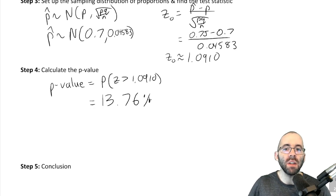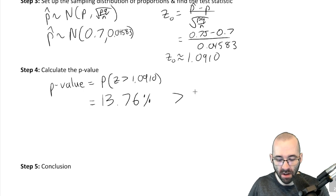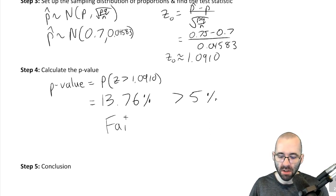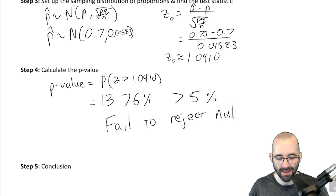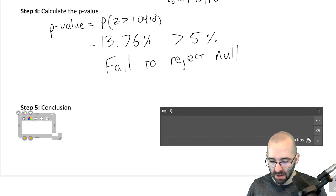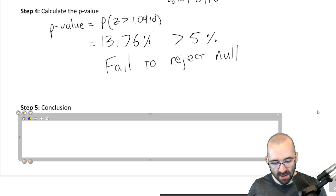Our p-value is not less than alpha. It's bigger than alpha. Alpha is usually 5%. 13% is definitely bigger than 5%. So we do not reject the null. This is the triple negative one. What our conclusion will look like: it will always look kind of the same.